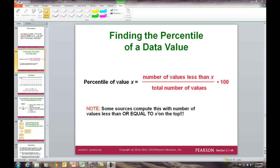Okay, percentiles and quartiles. Here is our simple formula for figuring out a percentile. We take the number of values less than x divide by the total number of values in our data set and multiply that by 100.